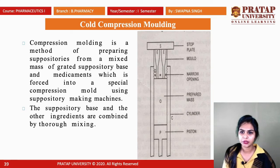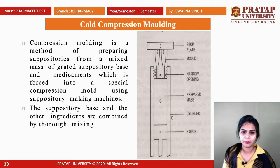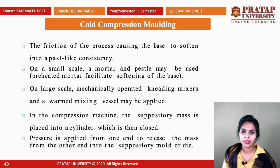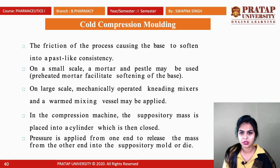Cold compression molding is a method of preparing suppositories from a mixed mass of grated suppository base and medicaments, which is forced into a special compression mold using a suppository-making machine. The suppository base and other ingredients are combined by mixing, and the friction of the process causes the base to soften into a paste-like consistency. On a small scale, a mortar and pestle or a preheated mortar may be used to facilitate softening.